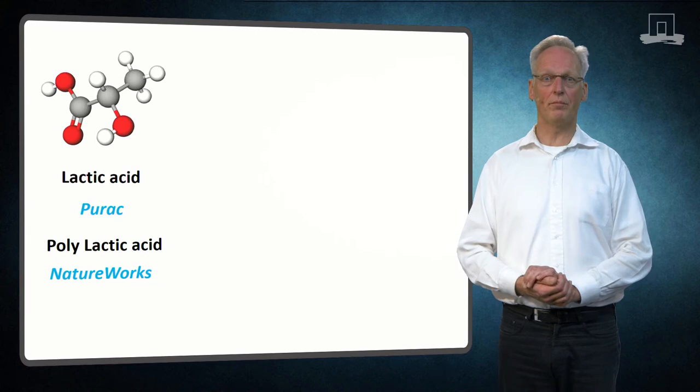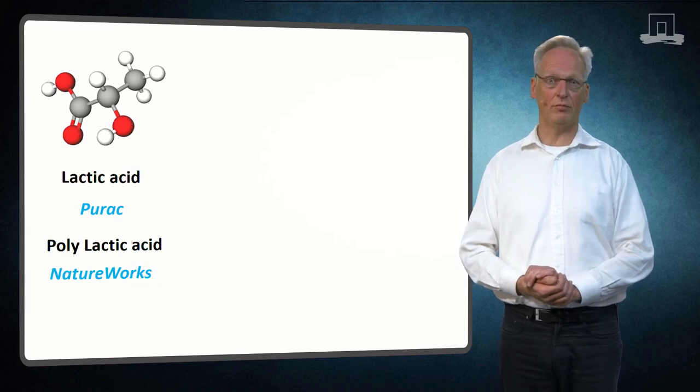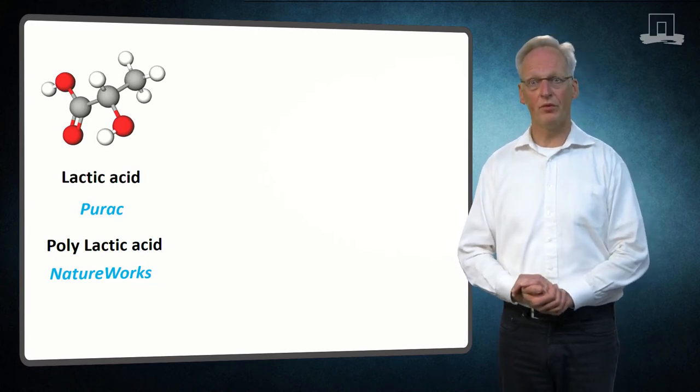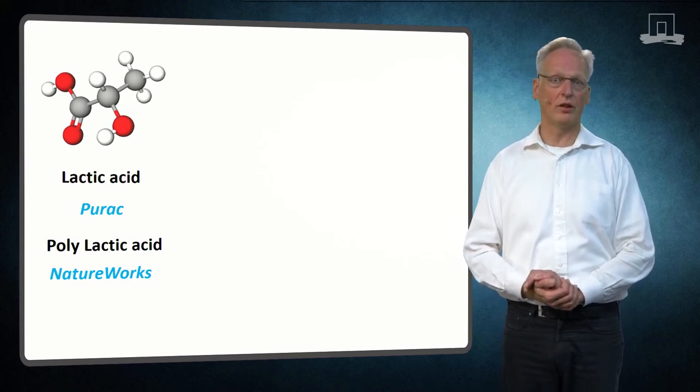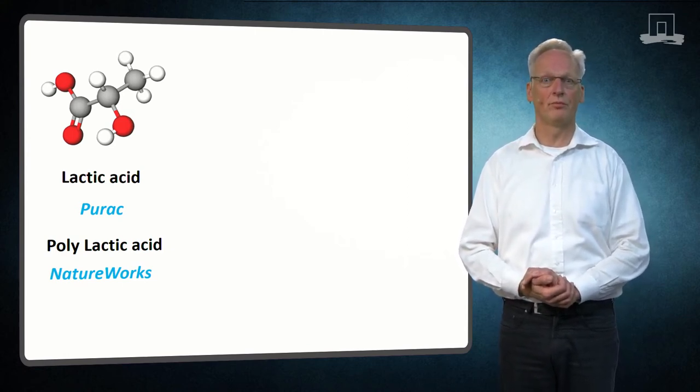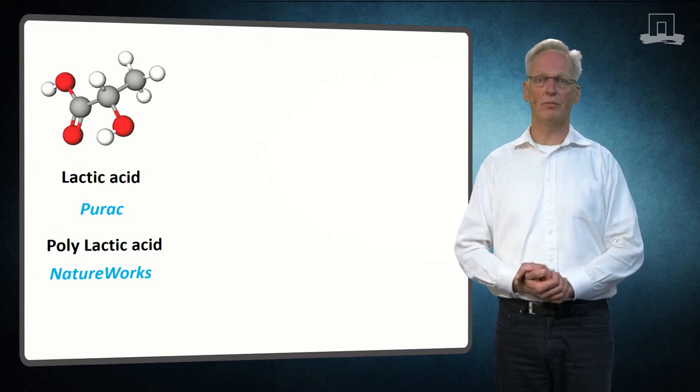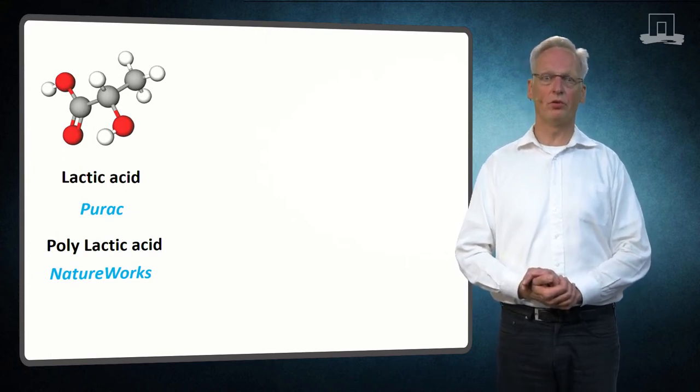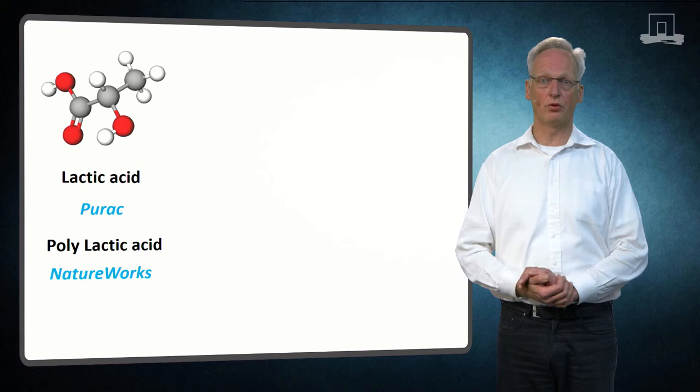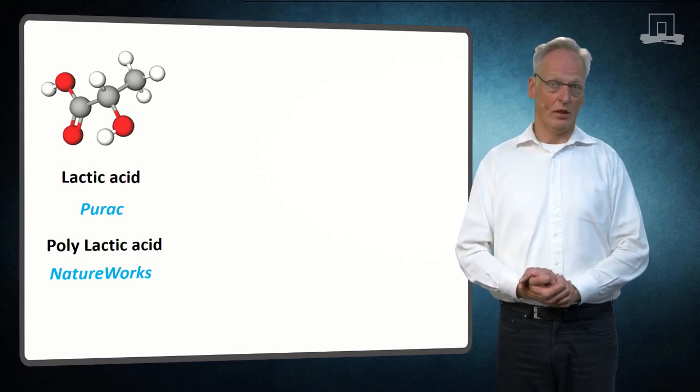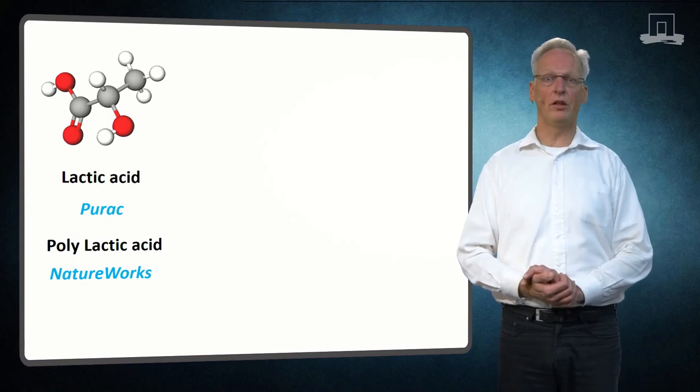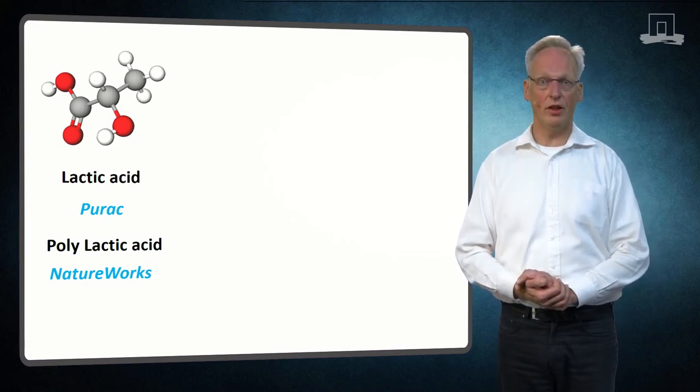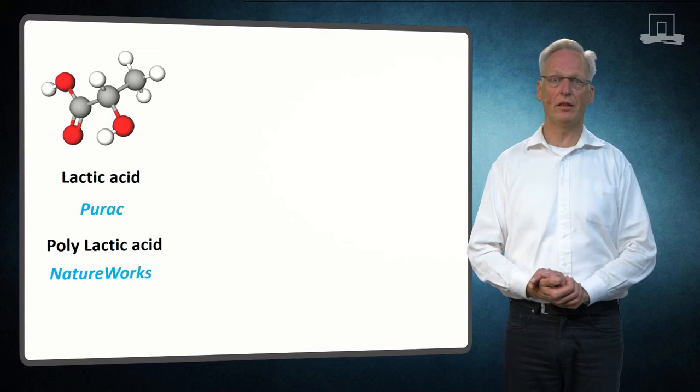C3-containing compounds are also already established in markets, at least some of them. Think of lactic acid, used in personal care products as a solvent or as a preservative. Polylactic acid can be used in large volumes as well, for containers, trays, shrink wrap, carpets, and clothing. The Dutch company Corbion is global leader in lactic acid, and NatureWorks in Nebraska is leading in PLA.